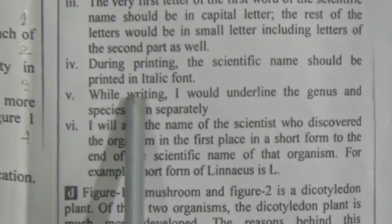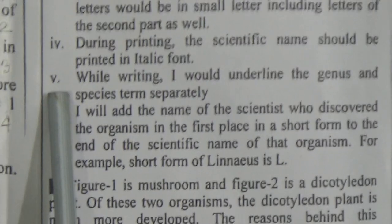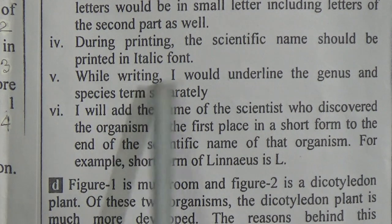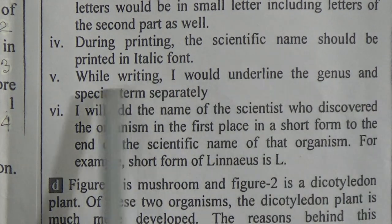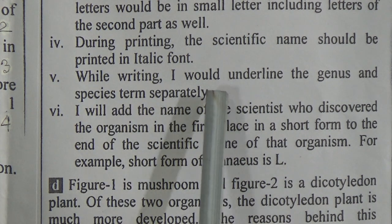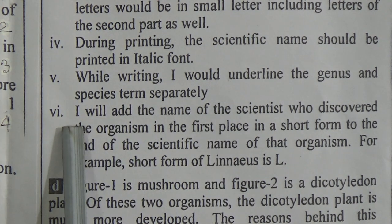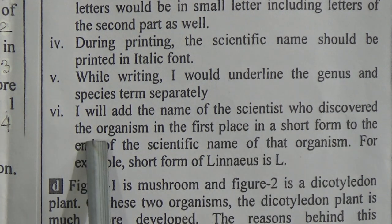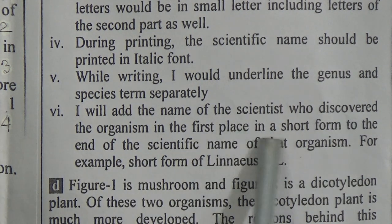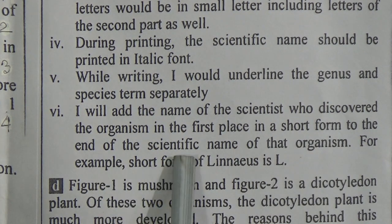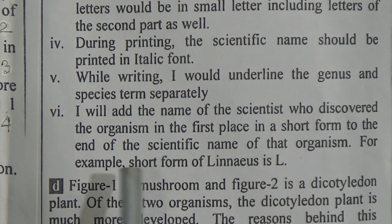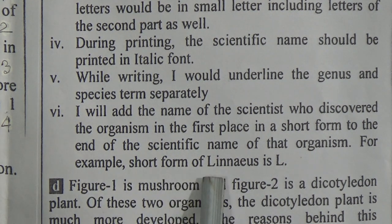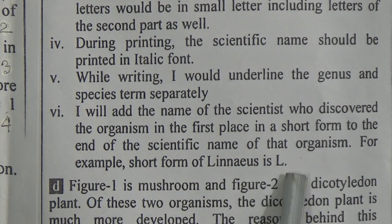Number four: during printing, the scientific name should be printed in italic font. Number five: while writing, underline the genus and species terms separately. Number six: add the name of the scientist who discovered the organism in a short form at the end of the scientific name. For example, the short form of Linnaeus is 'L'.